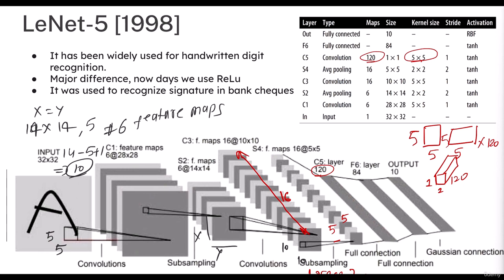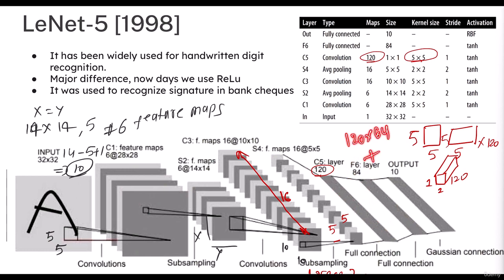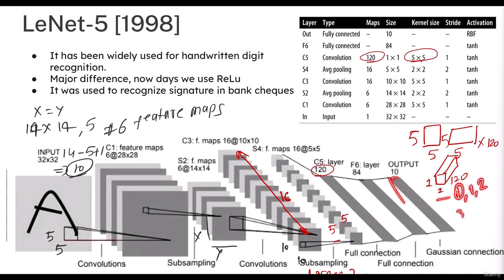After this convolutional layer with 120 cells, a fully connected layer is applied with a size of 84 cells. The total number of parameters between these layers is 120 multiplied by 84, plus the bias of 84 — so 120×84 + 84. Thereafter, at the final stage, this was designed with 10 output neurons for digit recognition, to detect the digits 0 through 9.